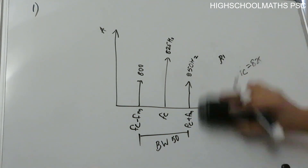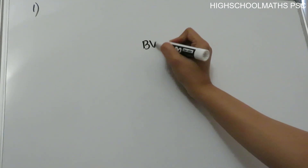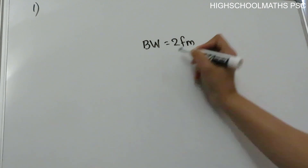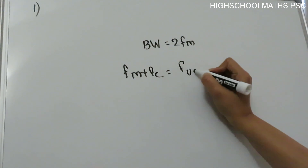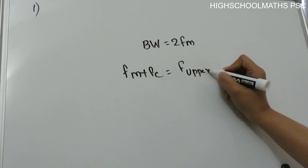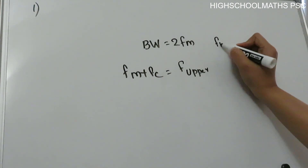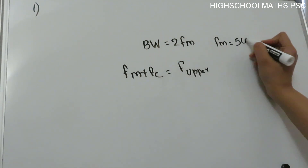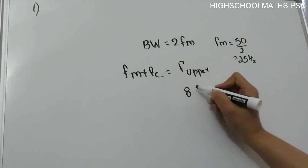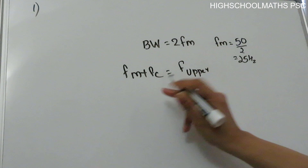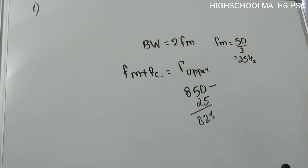Using the equation: the bandwidth is 2Fm, so Fm equals 50 divided by 2, which is 25 Hz. The upper band frequency is Fc plus Fm. Since bandwidth is 50 Hz, Fm equals 25 Hz, and Fc equals 825 Hz. This confirms the answer.